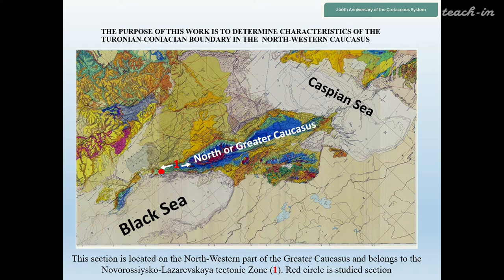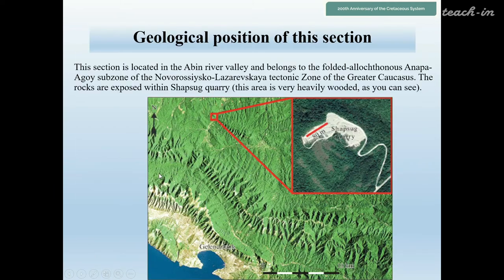This section is located in the northwestern part of the North, or Greater Caucasus, and belongs to the Novorossiysk-Lazarevskaya tectonic zone. The section is located in the Abin River Valley and belongs to the folded Anapa-Agoi subzone of the Novorossiysk-Lazarevskaya tectonic zone of the Greater Caucasus. The rocks are exposed within Shapsuk quarry.